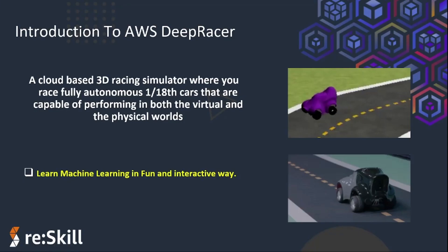So what is AWS DeepRacer? It is a cloud-based 3D racing simulator where you race fully autonomous 1/18 scale cars that are capable of performing both in a virtual environment and in the physical world. You can train, build, and optimize your own DeepRacer EVO. It was built for teaching machine learning in a fun and interactive way.